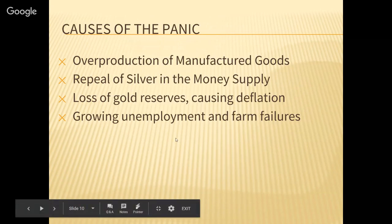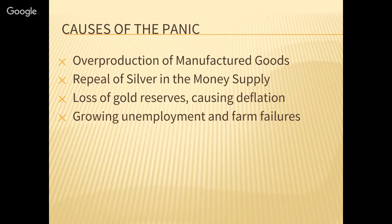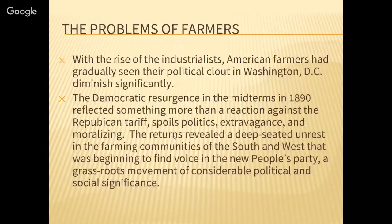Overproduction of manufactured goods — when you make too much of a product, the price will plummet. Because of a surplus of manufactured goods, it caused businesses to go belly up. The repeal of silver in the money supply, the loss of gold reserves causing deflation, and growing unemployment and farm failures all contributed. Every major economic downturn begins on the farm. The Great Depression of the 1930s began on the farm, and almost every major panic in American history sees farmers as the hardest hit.